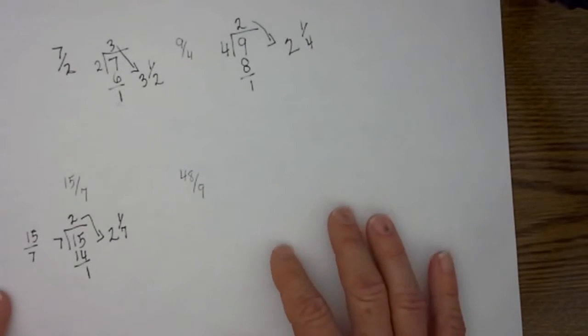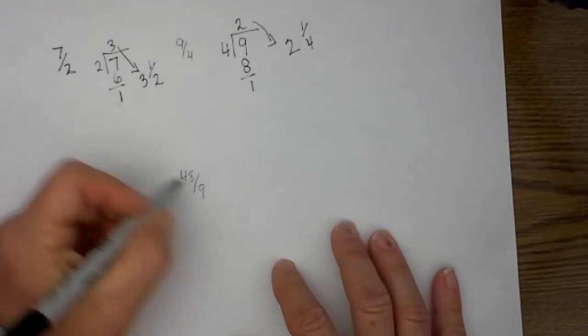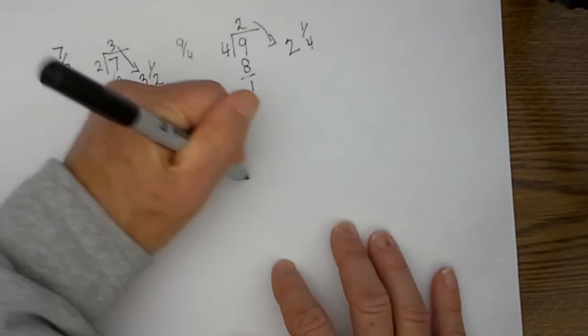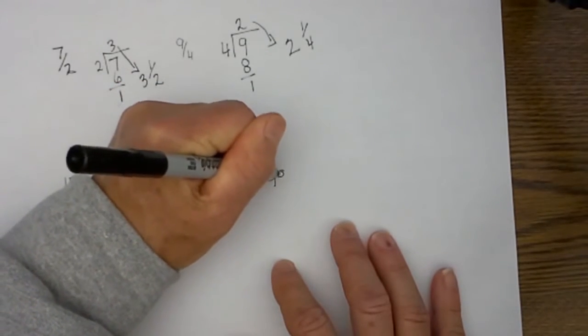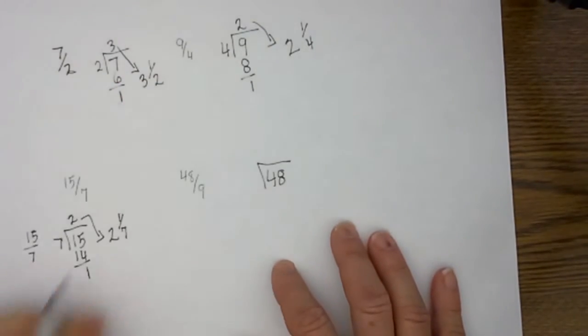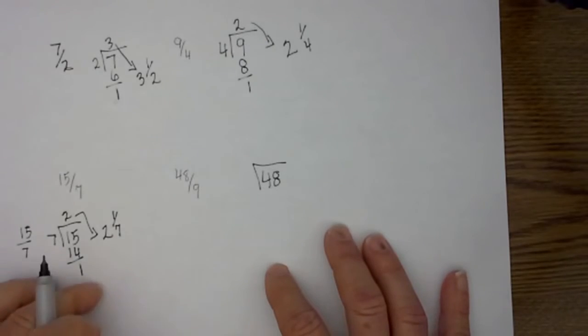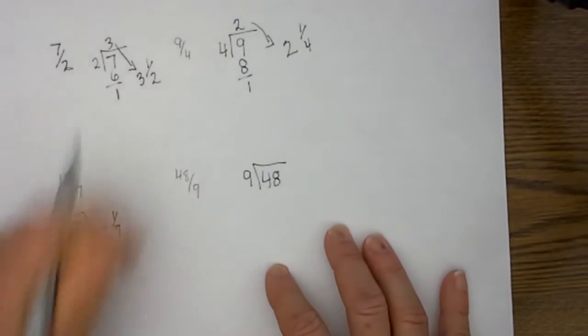Let's move one that is a little more challenging. Here is a strange improper fraction. I tried to do 9 because 9 is hard to divide. Anyway, we put 48 inside the dog house. I then place 9 on the outside.